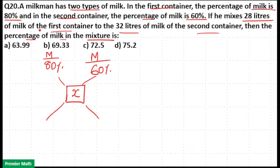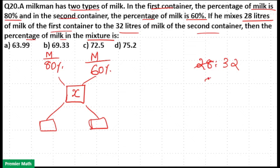He mixes 28 liters of milk solution from the first container and 32 liters from the second container, so the ratio is 28 to 32. Simplifying: 4 sevens are 28 and 4 eights are 32, giving a ratio of 7 to 8. So 7 corresponds to 80 minus x, and 8 corresponds to 60 minus x.